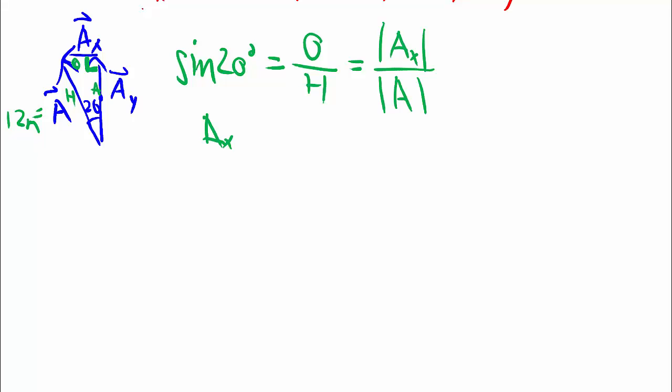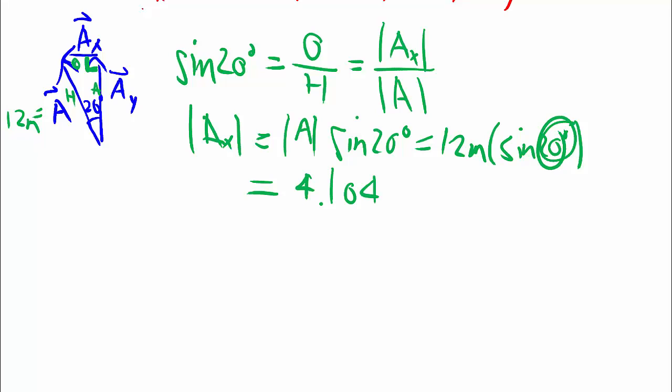And so solving for the size of Ax, we'll get the size of A, which we know as 12 meters, times sine 20 degrees. So that's 12 meters times sine 20 degrees. When you punch in your calculator, make sure your calculator is in degree mode, because we're using 20 degrees. And you should get 4.1042 meters. We'll keep a few more digits because we're going to do more calculation with them, so let's not round off too quickly.